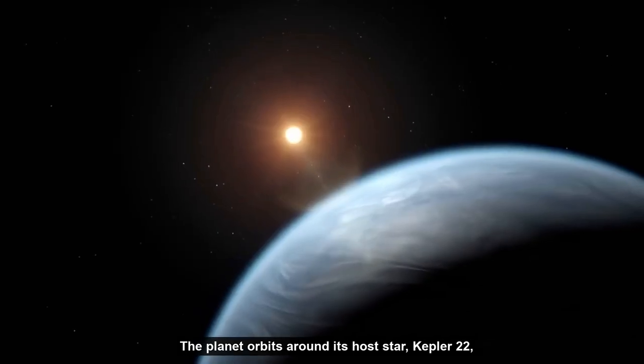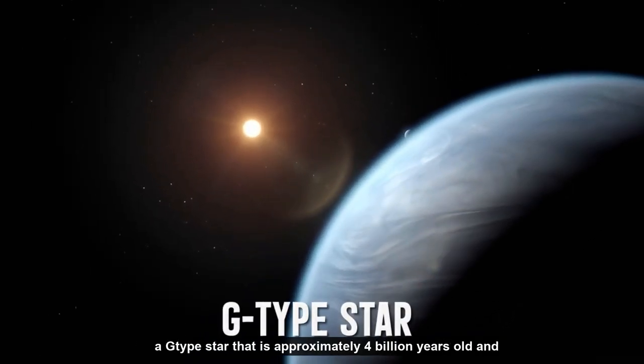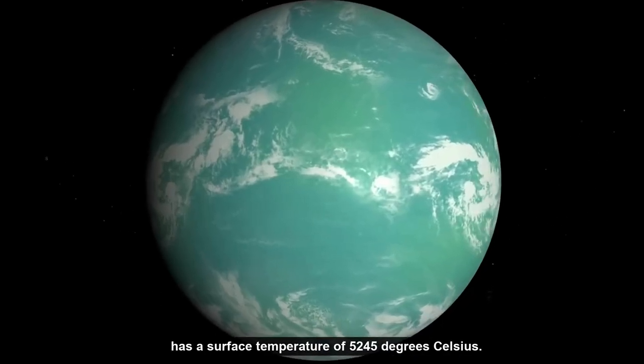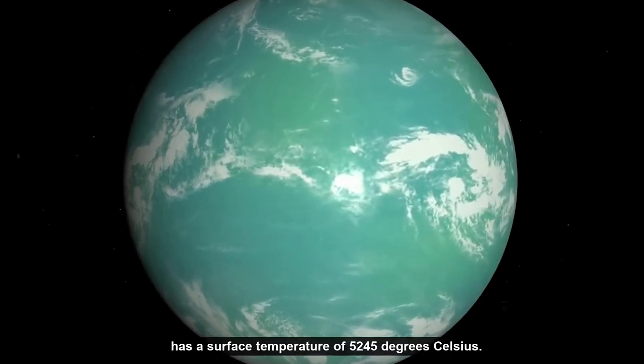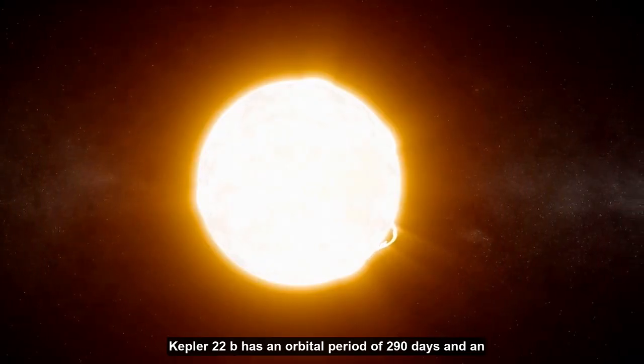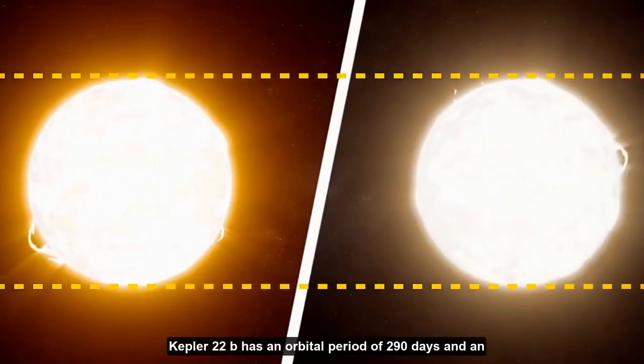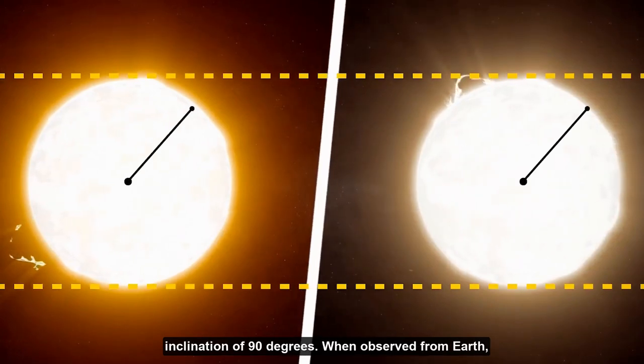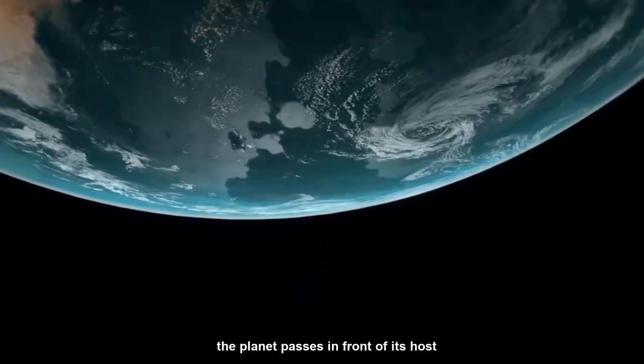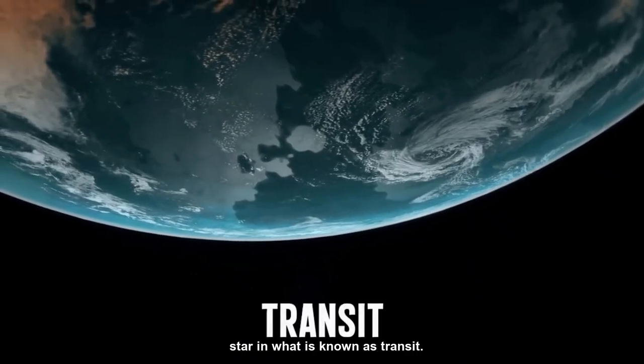The planet orbits around its host star, Kepler-22, a G-type star that is approximately 4 billion years old and has a surface temperature of 5,245 degrees Celsius. Kepler-22b has an orbital period of 290 days and an inclination of 90 degrees. When observed from Earth, the planet passes in front of its host star in what is known as transit.